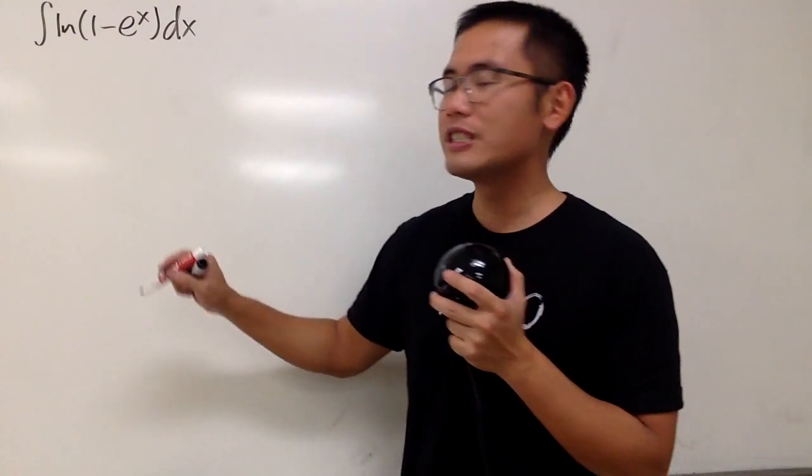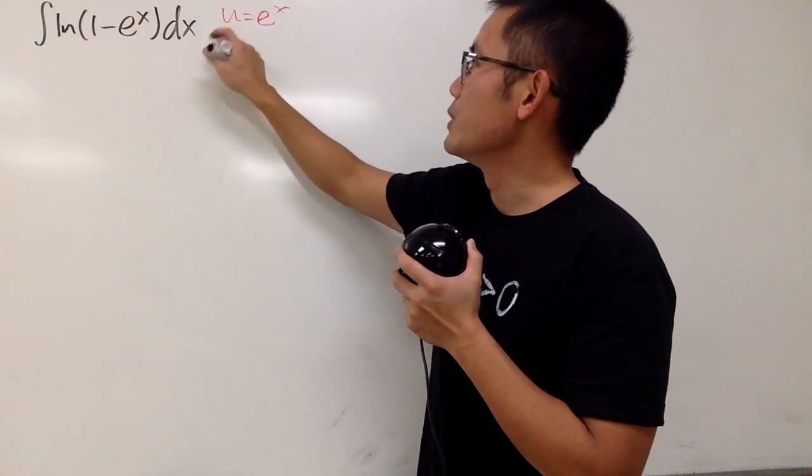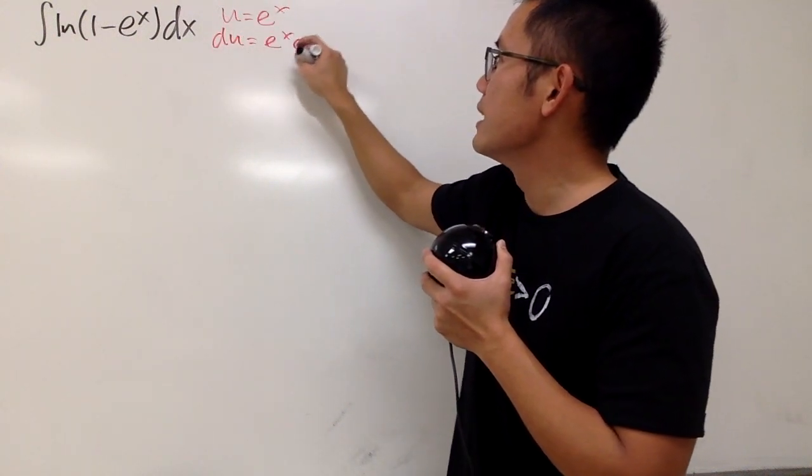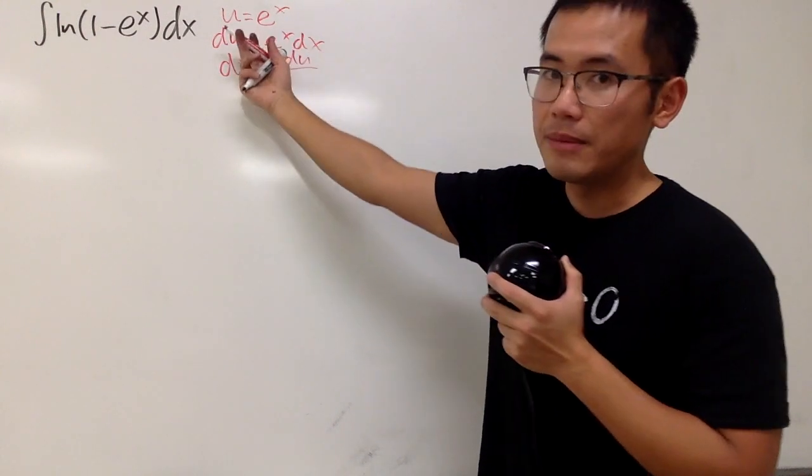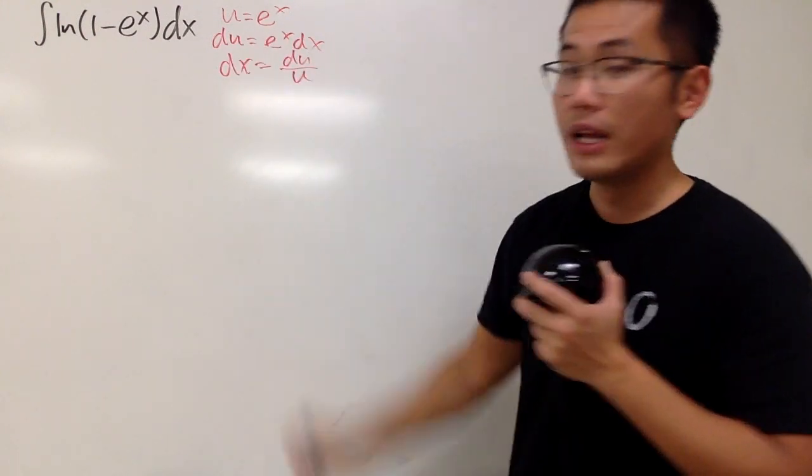So we'll see how to finish this right here. Of course, we'll take a u substitution, let u equal to e to the x, and we'll see that du is equal to e to the x dx, and dx is equal to du over e to the x, which is the same as u, so we'll just put that down right here.